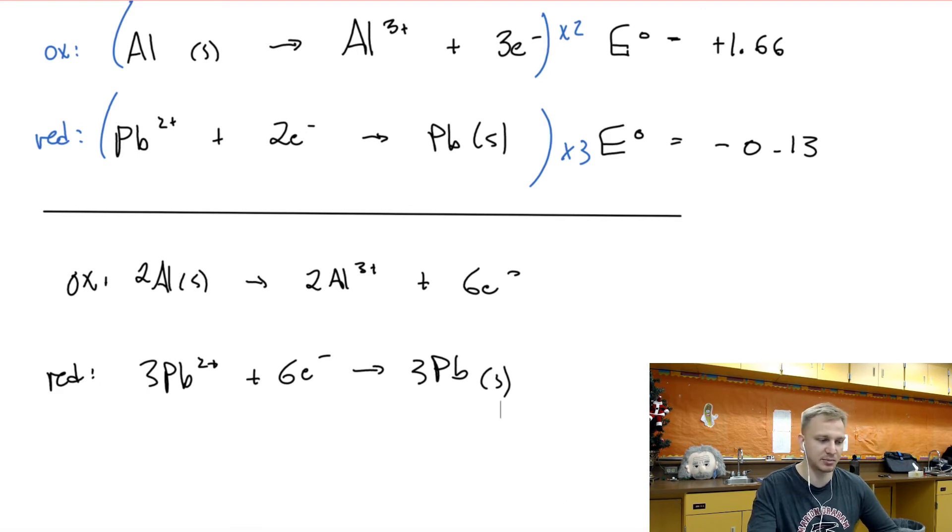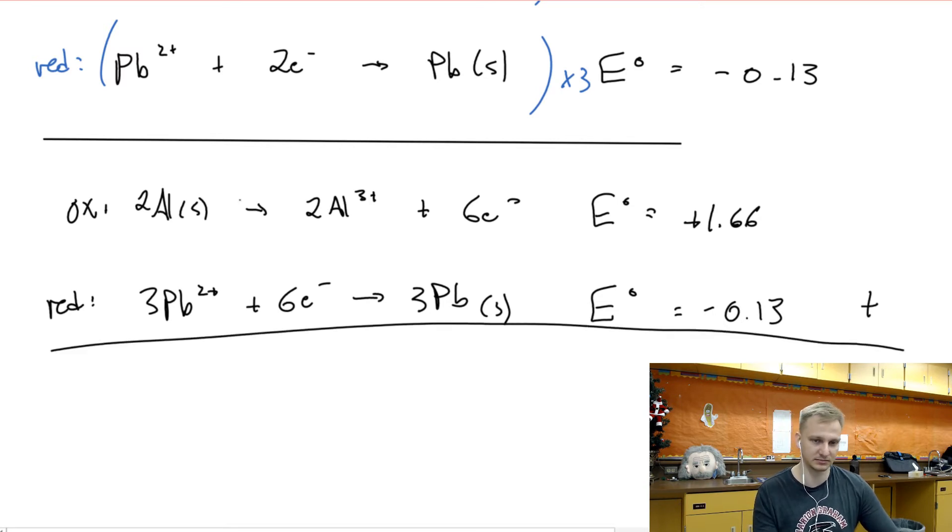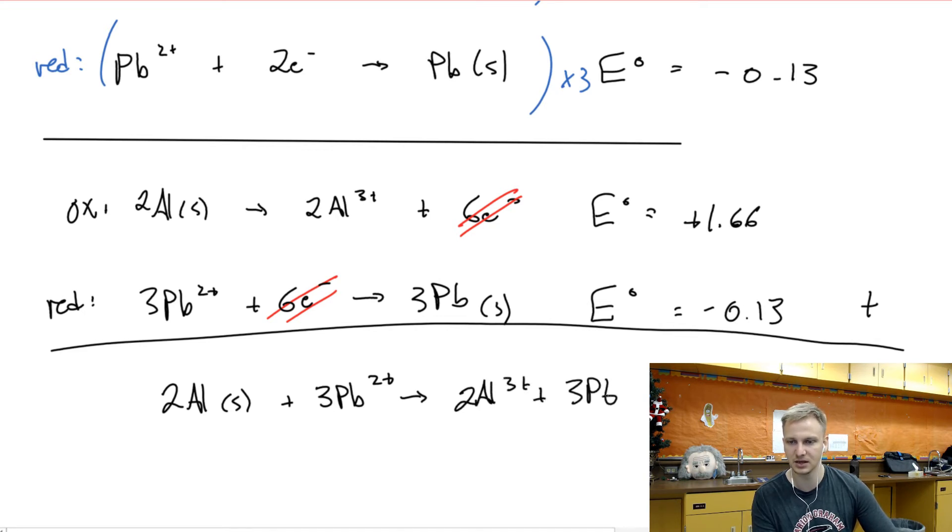So you'll notice I didn't adjust any of these E potential values at all, and the reason is that I wanted to overall have those values stay the exact same. And so what we end up with then overall here is we basically take these two different equations. So we take the E potential of the plus 1.66 and we take the E potential of this negative 0.13, and you basically just add them together. These six electrons you can just cancel those out, similar to balancing oxidation reactions. But what we end up with is this two ALs plus three PB2 pluses reacts to produce two AL three pluses plus three PB. And then our overall E potential here is we take plus 1.66 subtract the 0.13, and we end up with an overall 1.53 volts.